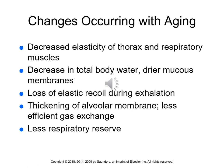Several changes occur in our elderly population with respect to the respiratory system. They have decreased elasticity of their thorax and respiratory muscles. Their total body water decreases, so their mucous membranes will be drier. There is loss of elastic recoil during exhalation, the alveolar membrane thickens — which lessens the effectiveness of gas exchange — and less respiratory reserve. All of these make elderly patients more vulnerable to developing acute respiratory infections.